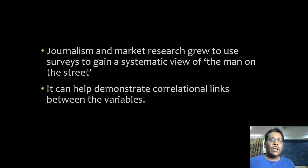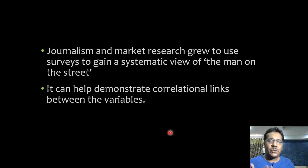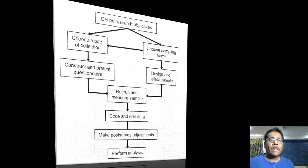Journalism and marketing research grew to use surveys because it was seen as one of the most effective ways of finding out the view of the man on the street. Public opinion polling is a very effective way of finding out people's opinions. Survey research also helps demonstrate correlation links between variables and whether there is a difference between two groups.